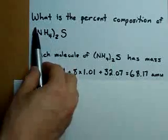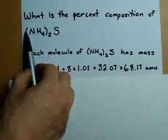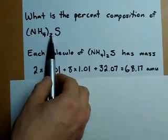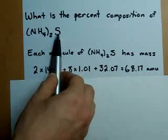Remember that the 2 on the outside of the brackets here tells us that we have 2 of each of these units. We have 2 nitrogens, and 8 hydrogens, and 1 sulfur.